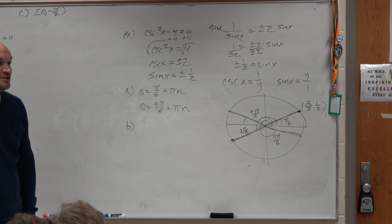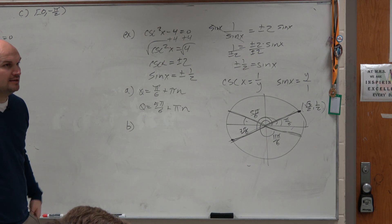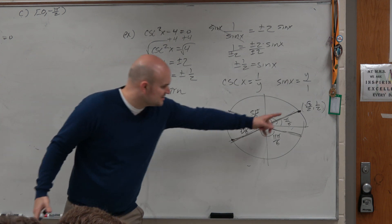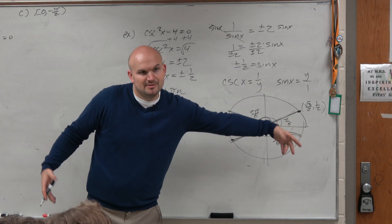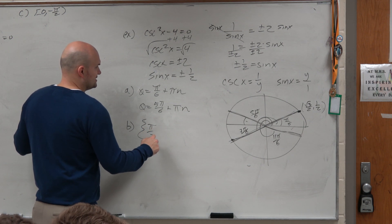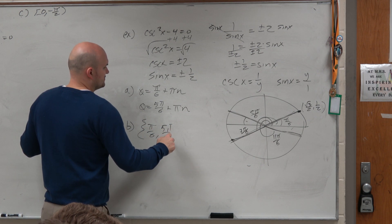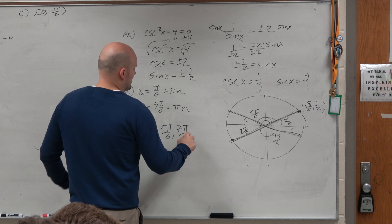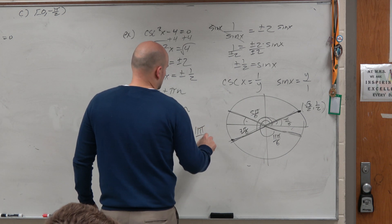B. B is find all the solutions between 0 to 2 pi. Well, that's not too bad. That's just all of them that are on the unit circle, right? Plus and minus. So that's pi over 6, 5 pi over 6, 7 pi over 6, and 11 pi over 6.